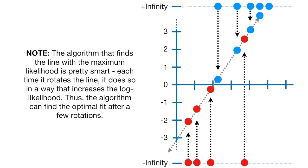Note, the algorithm that finds the line with the maximum likelihood is pretty smart. Each time it rotates the line, it does so in a way that increases the log likelihood. Thus, the algorithm can find the optimal fit after a few rotations.